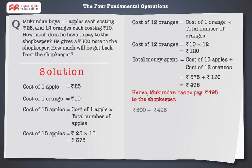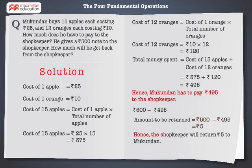Now Mukundan gives a rupees 500 note to the shopkeeper, so we have to subtract rupees 495 from rupees 500 to find out the money that the shopkeeper will return to Mukundan. Rupees 500 minus rupees 495 is equal to rupees 5. Hence, the shopkeeper will return rupees 5 to Mukundan.